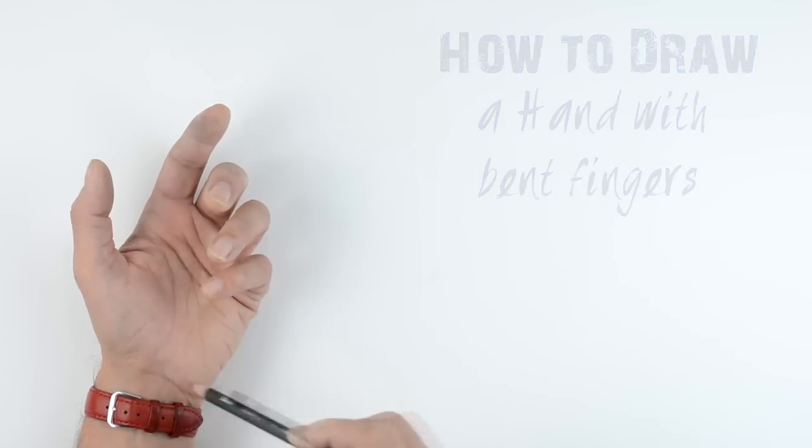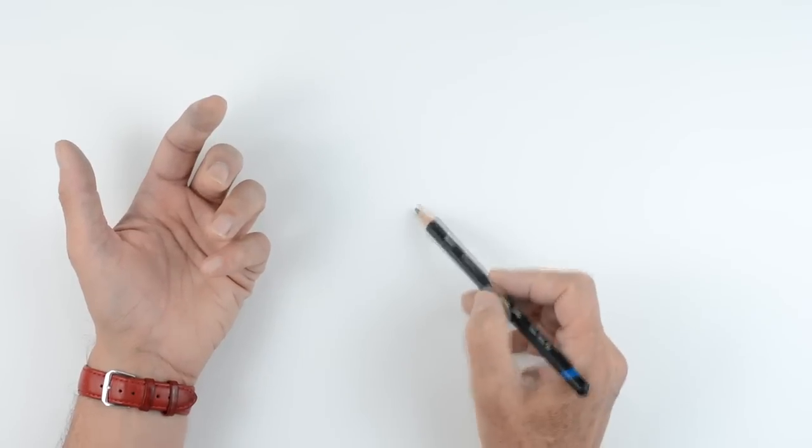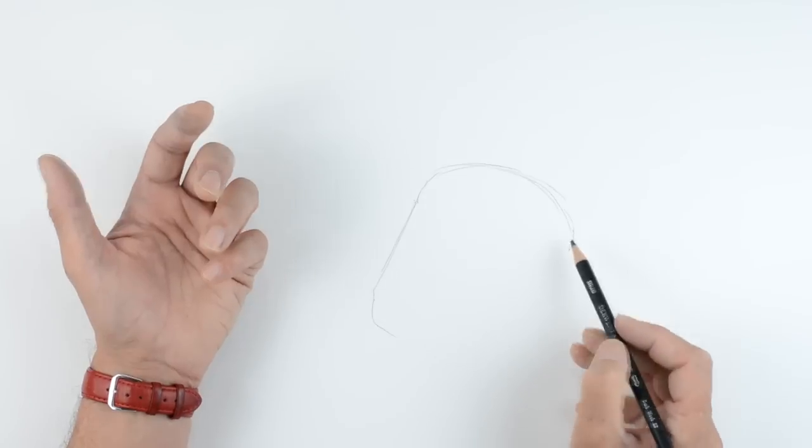If we're going to start, we're going to start with the basic shape of the hand first of all. You'll notice we've got these little bumps and lumps coming out here, so we're just going to make a few little bumps around here.